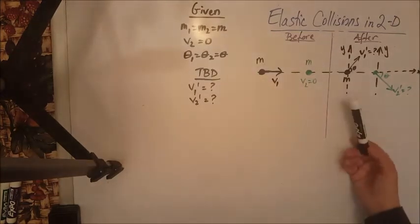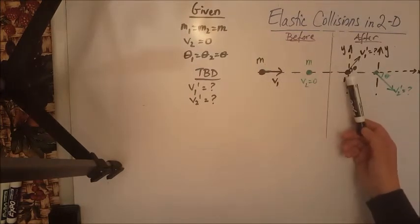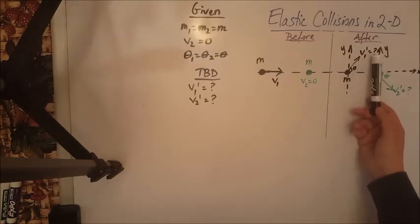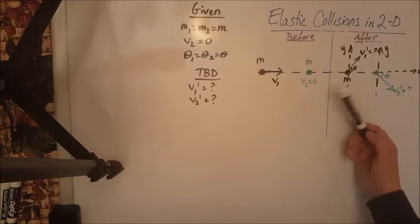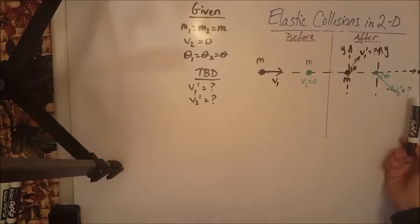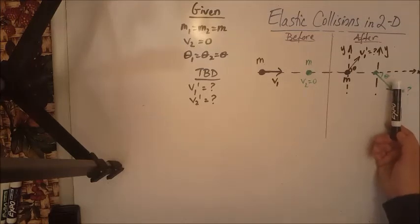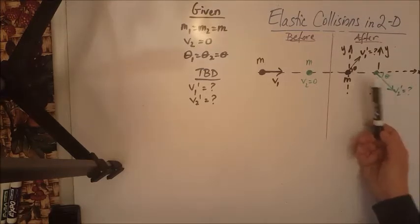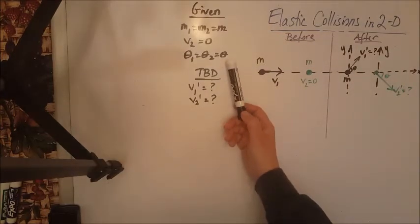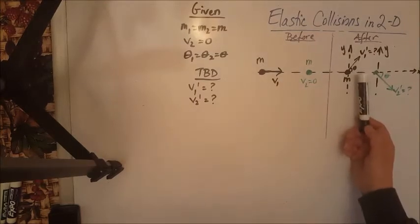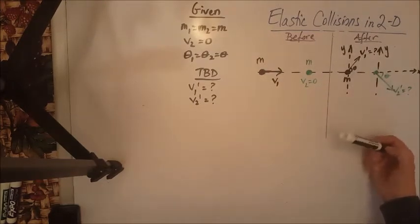After they collide elastically, the first object will move with velocity V1 prime at an angle theta1 with the x-axis in the first quadrant. And the other object will move with velocity V2 prime at an angle theta2 in the fourth quadrant with respect to the x-axis. Now, theta1 and theta2 are equal to each other and equal to theta, so rather than using the indices, I just wrote theta for simplicity reasons.